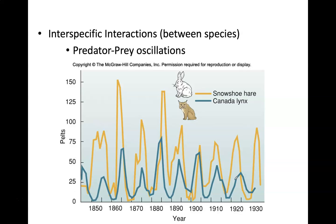The lynx population is always lower than the snowshoe hare, and that's tied to what we discussed in the energy chapter. The lower you are on the food chain, the more energy you get. The grass has 100% energy; the snowshoe hares only get 10%, and the lynx only get 1% of that energy. So their population ends up being much smaller overall. In the next video, we'll pick up talking about reproductive strategies and more population interactions.